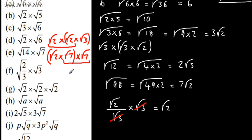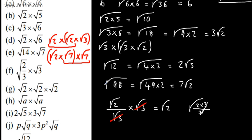If you didn't spot this, you could have written this as the root of 2 times by 3, divided by 3, and then cancelled off like so. I think it's easier, though, to simply split it the first way.